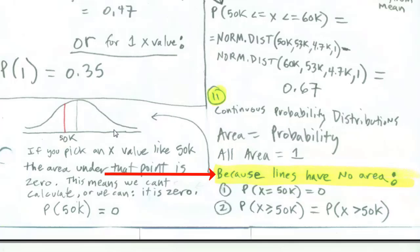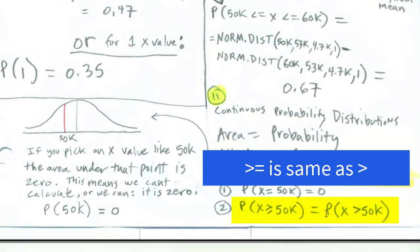And the reason why is because if we plot this right here, an exact x, it's a line. And the area for that line is 0. So we can actually try, but it's 0. Not only that, but if we use greater than or equal to, so this is x greater than or equal to 50,000, that's going to be equal to x greater than 50,000, because the line has no area.